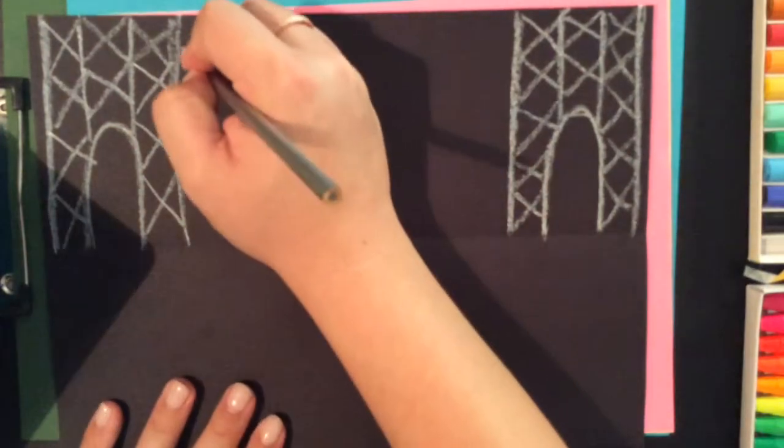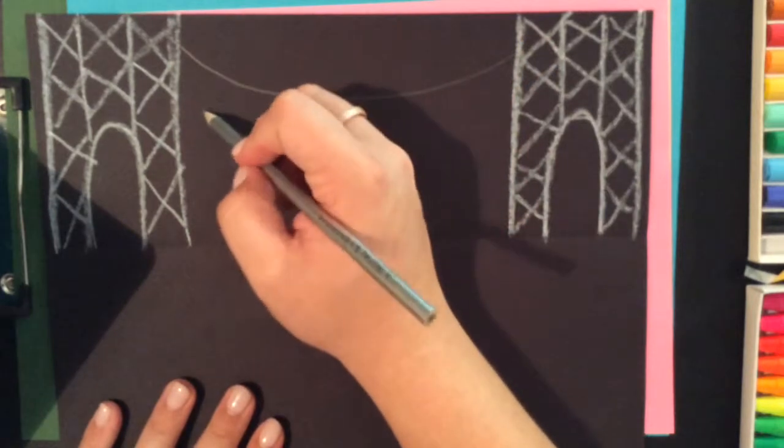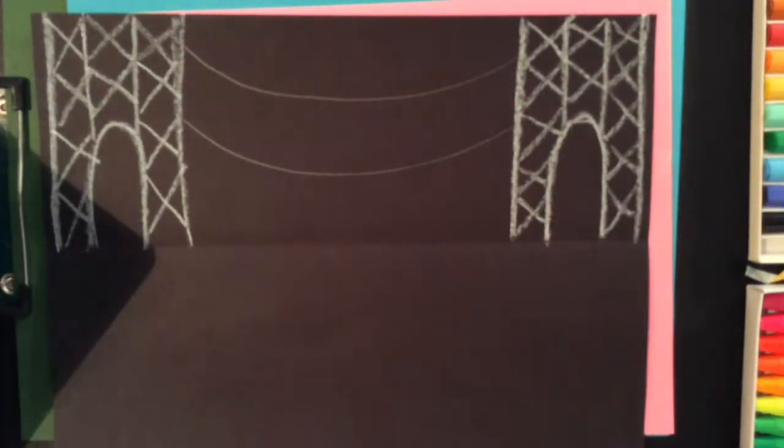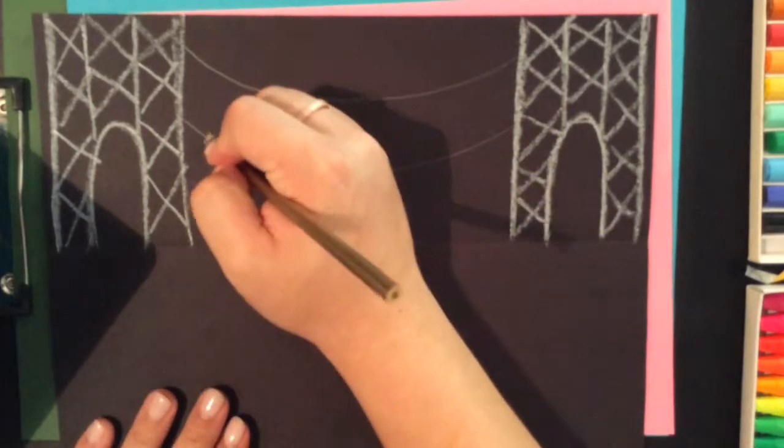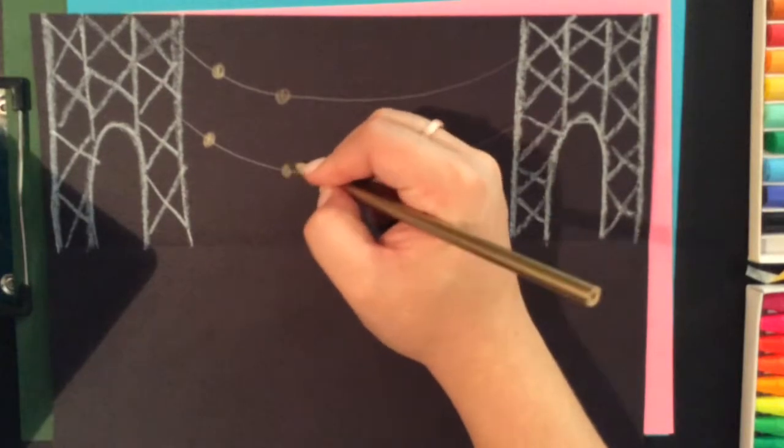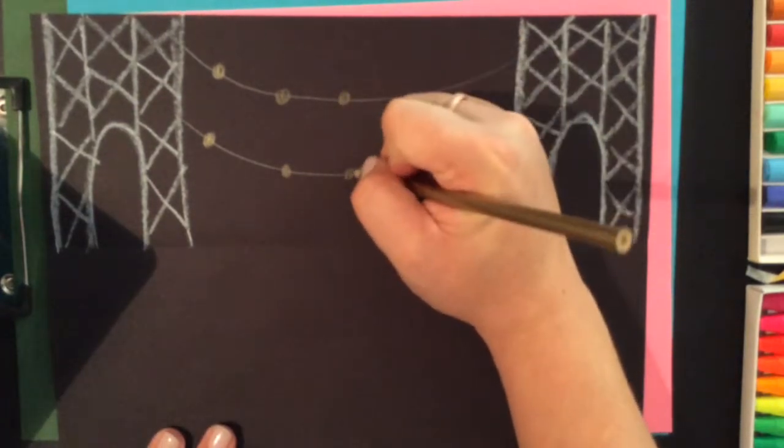You can use metallic colored pencils, which we have in the colored pencil bins, to add some of the more fancy details to the George Washington Bridge, like the lights that hang on the cables that hang between the two bridges.